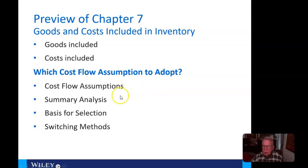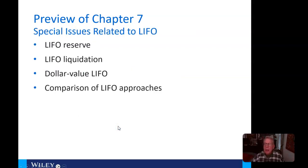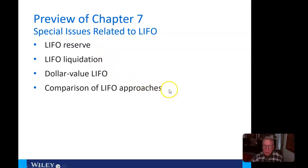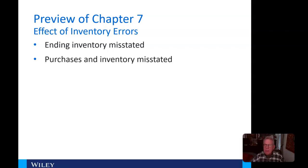We have cost flow assumptions, a summary analysis, a basis for selection, and switching methods. Then our special issues related to LIFO: the LIFO reserve, LIFO liquidation, dollar value LIFO, and the comparison of LIFO approaches. And then the effect of inventory errors — what happens if ending inventory is misstated, what happens if purchases and inventory are misstated, and how that gets corrected.